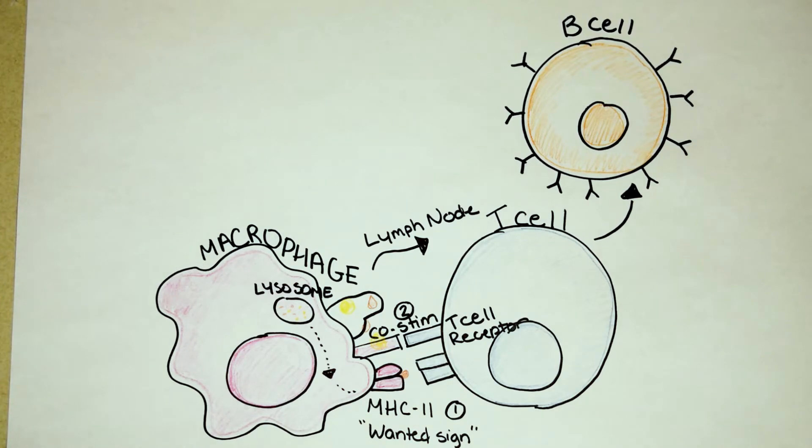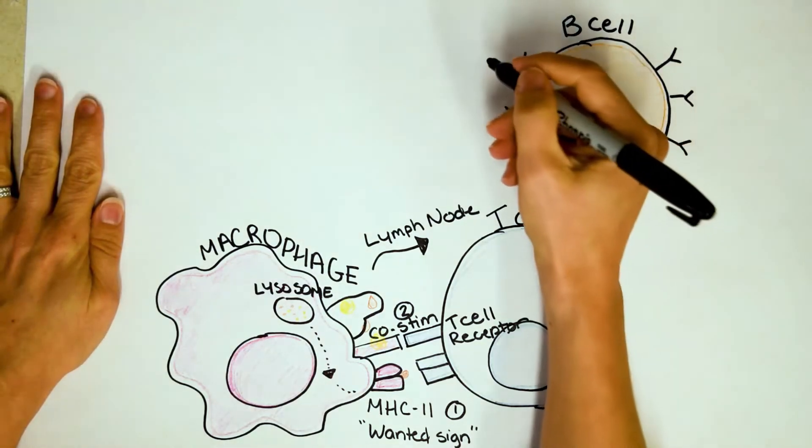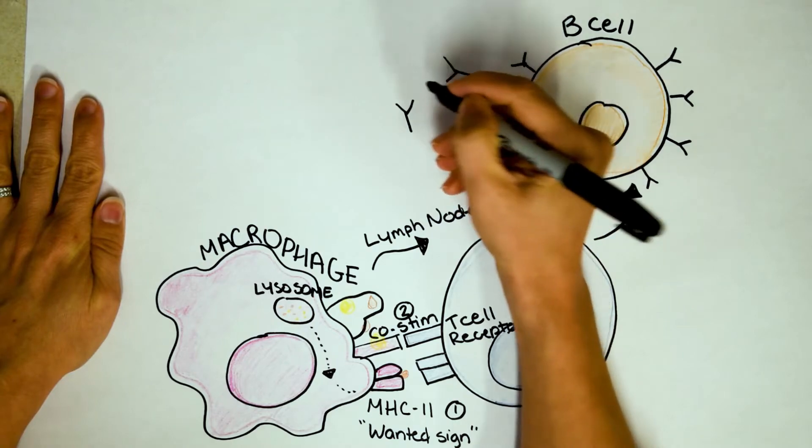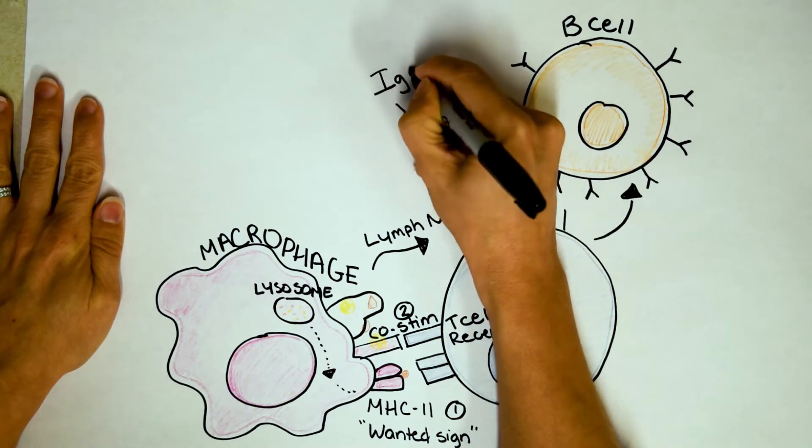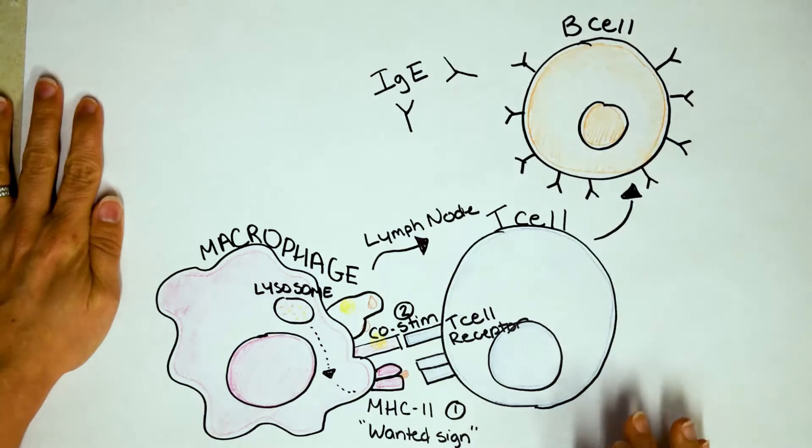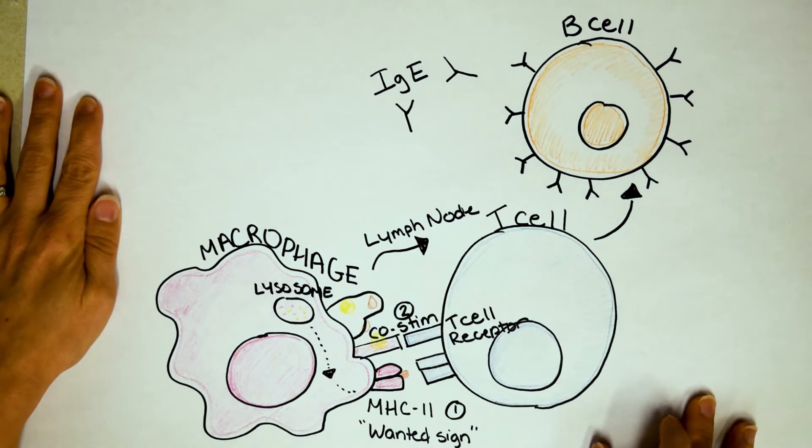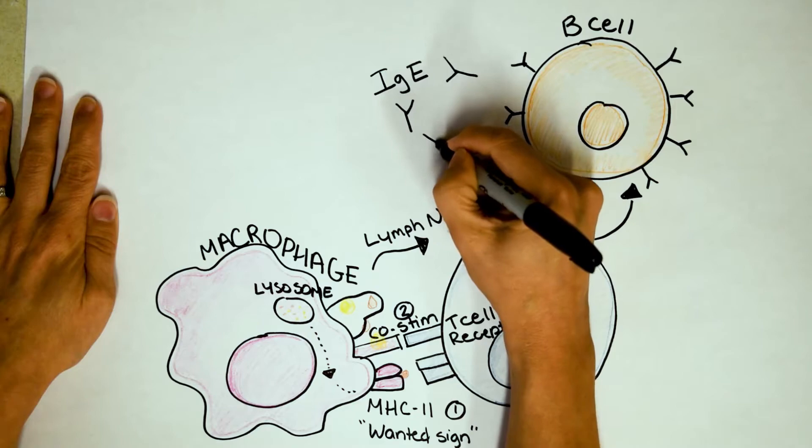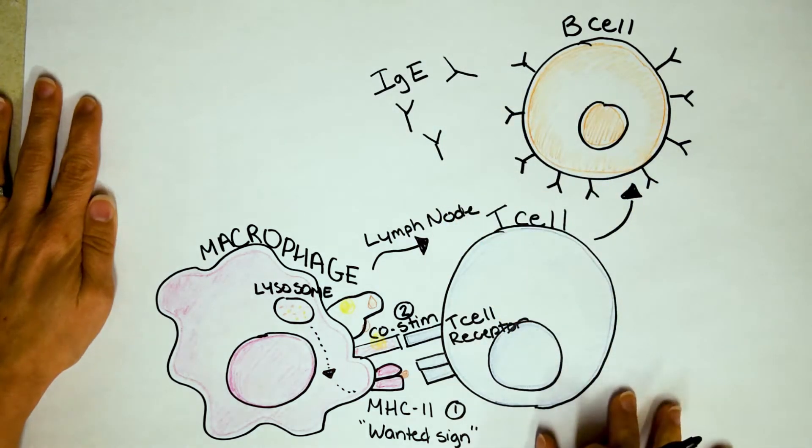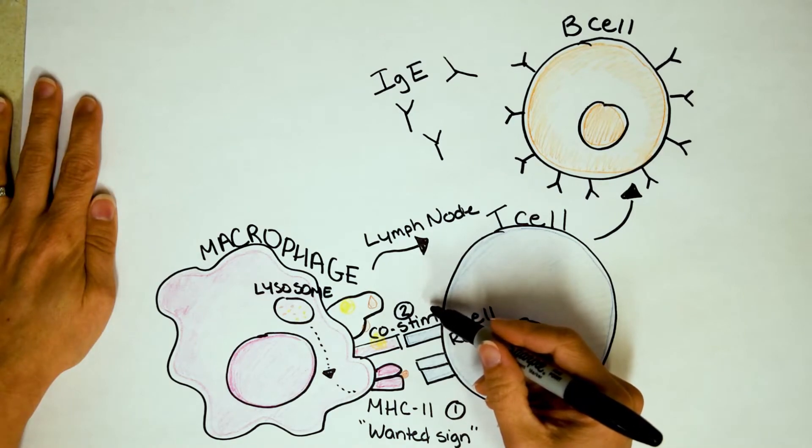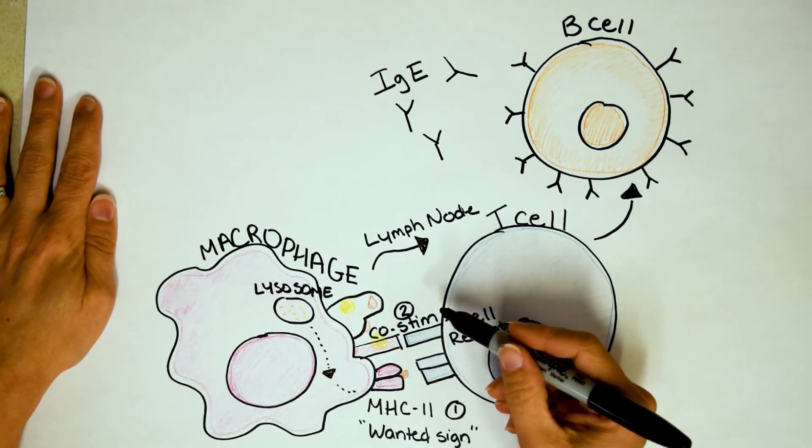Alright, so the B cell is going to make one specific type of antibody. It's called IgE, and it stands for immunoglobulin. And the E actually represents Greek letters, but that's not the important point. The important point is that these antibodies, they're the whole cause of allergies.